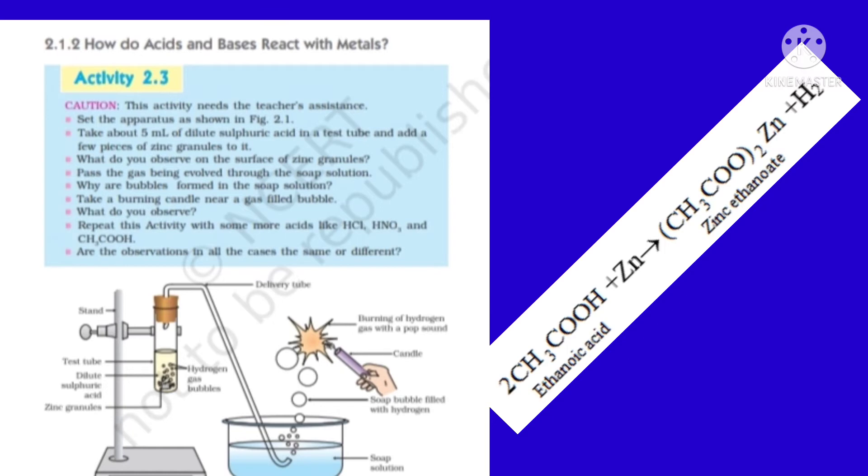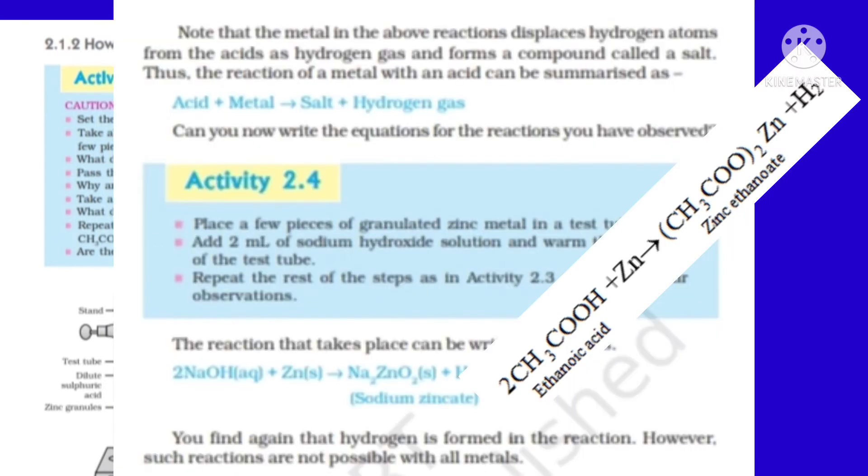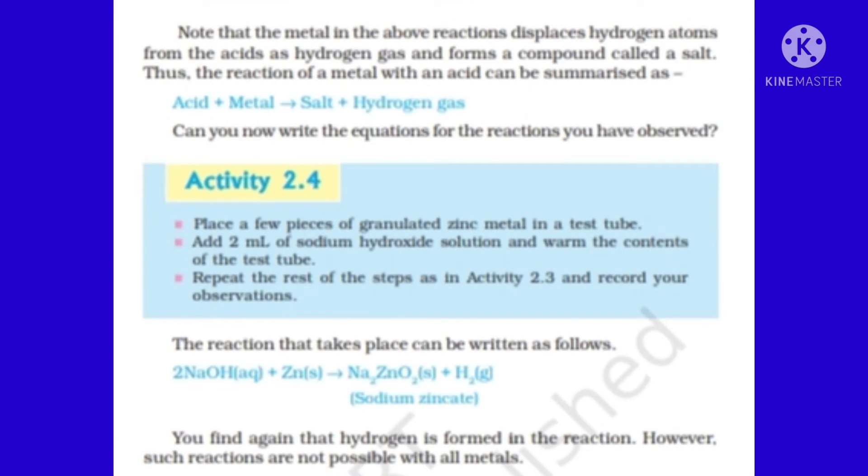We have studied metal with acid. Now we are going to study metal with base. You might have studied in the previous class, most metals react with acid. Very few metals don't react with acid like silver, gold, platinum, etc. But in case of base, very few metals react with base like zinc, aluminum, and lead. These metals react with base to form salt and hydrogen gas.